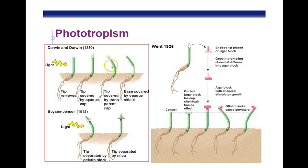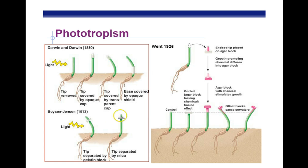It turns out that it's the tip responsible for triggering movement toward the light. If we separate the tip with a gelatin block — where chemicals can diffuse through — the plant still moves. But if we separate the tip with mica — where chemicals can't pass through — there is no movement toward the light, even though both top and bottom are exposed to light. So something in the tip is being sent down to bend the plant.